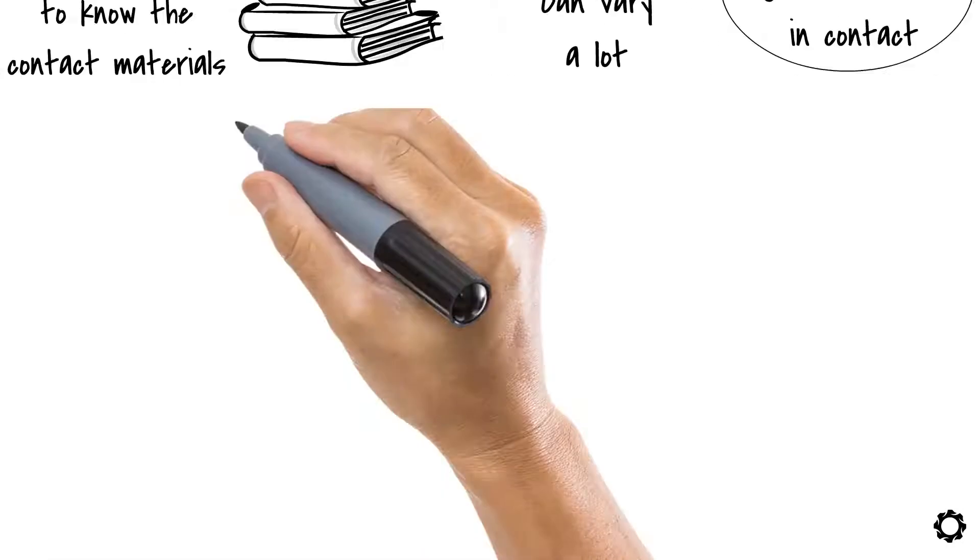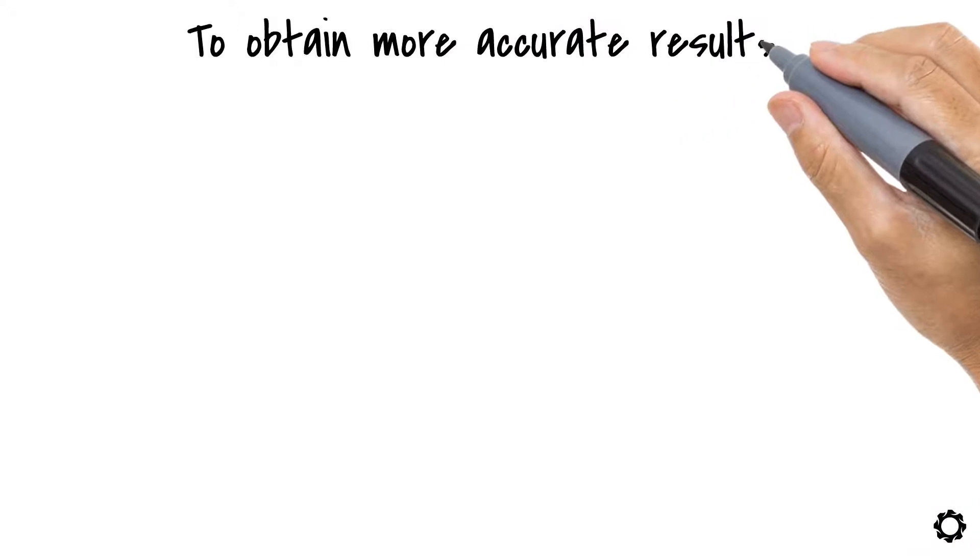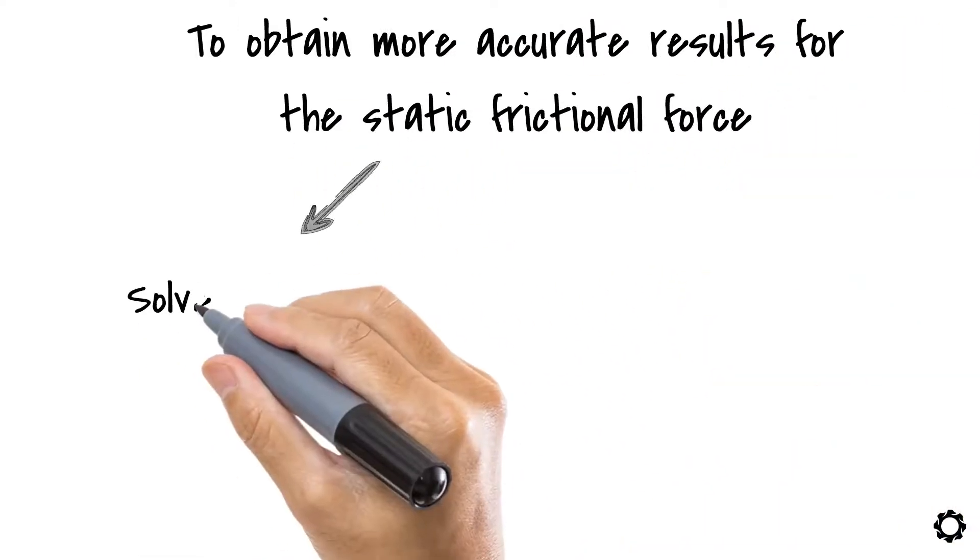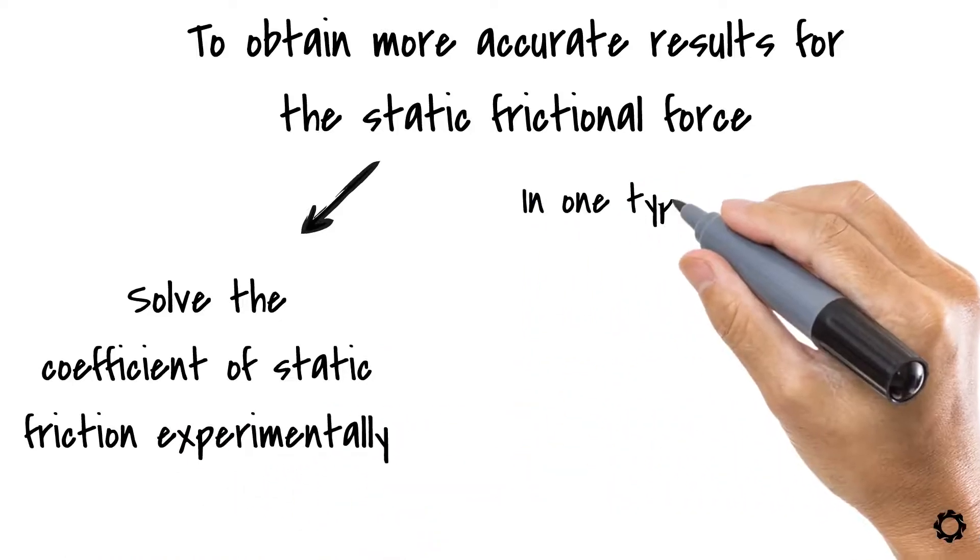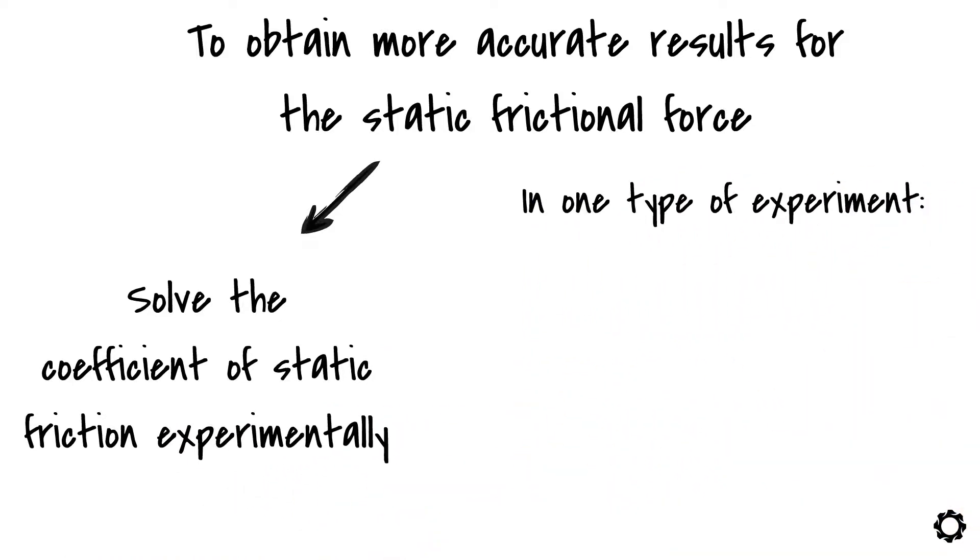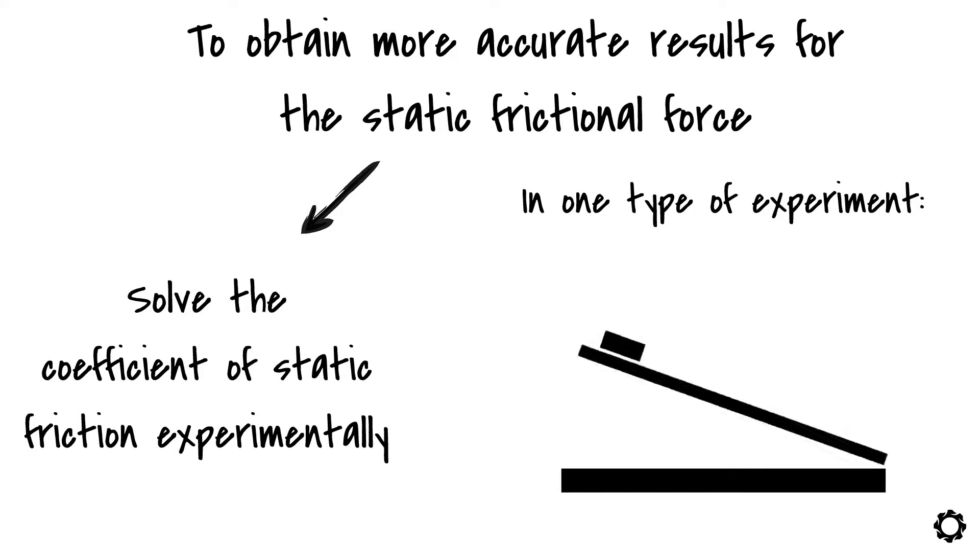However, when you want to obtain more accurate results for the static frictional force, then you need to solve the coefficient of static friction experimentally. In one type of experiment, we set a certain object, whose weight we know, on an inclined plane, after which we start to increase the inclination of the plane until the object begins to move.